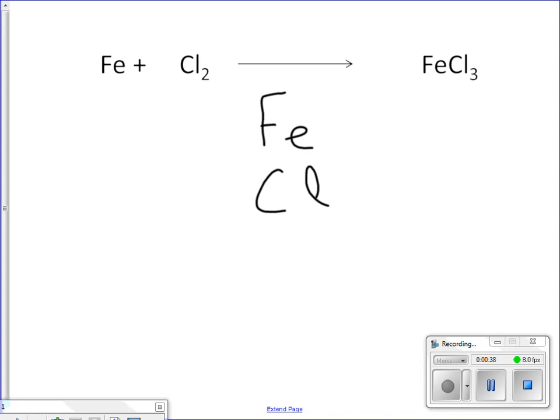So with iron, that one's pretty easy on the reactant side. There's no coefficient and there's no subscript, so there's just one iron. On the product side, we've got FeCl3. That 3 only affects the number of chlorines, so we also just have one iron on the product side.